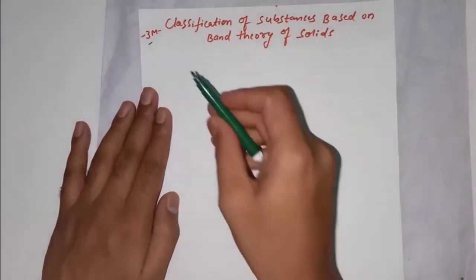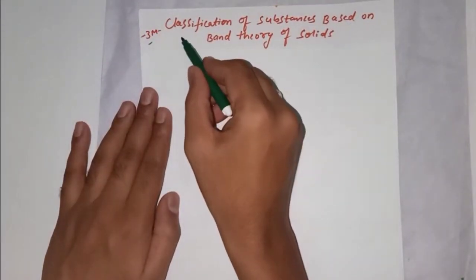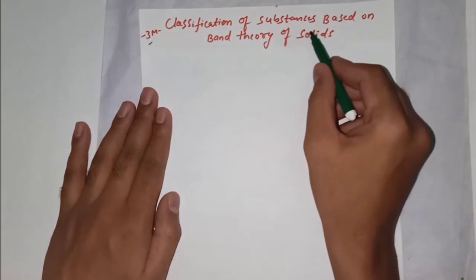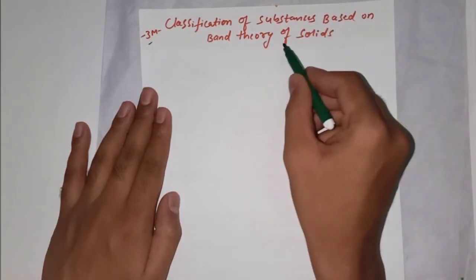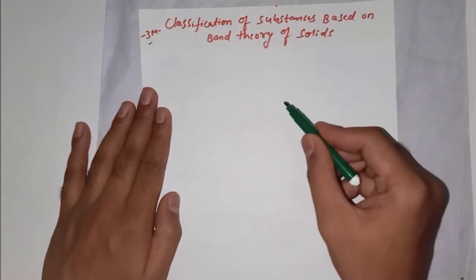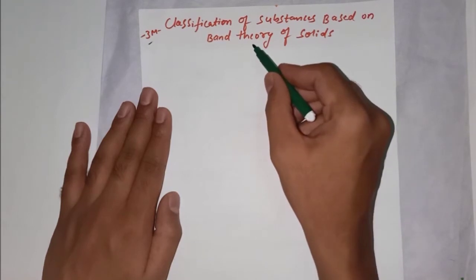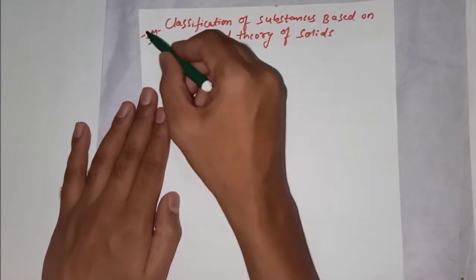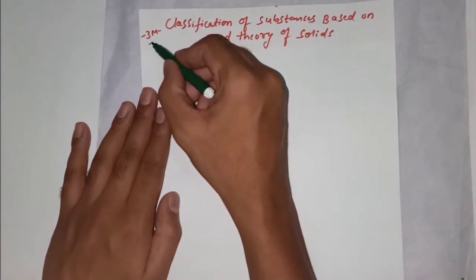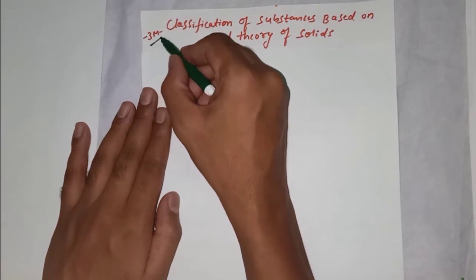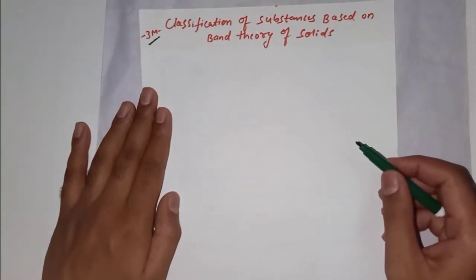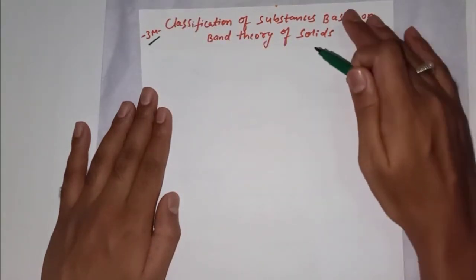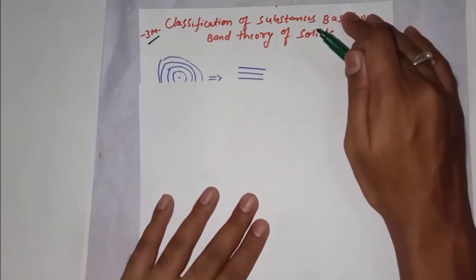Next topic: classification of substances based on band theory of solids. This is one of the most important topics and it comes many times in the final exam, carrying up to 43 marks.